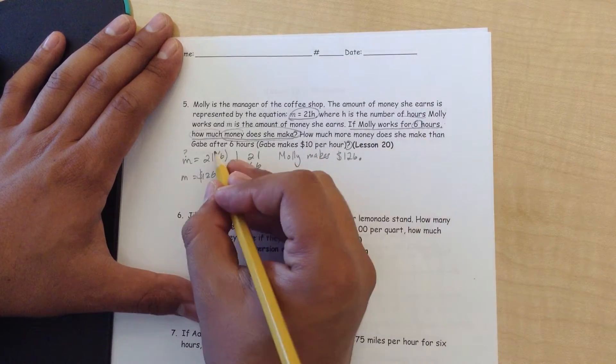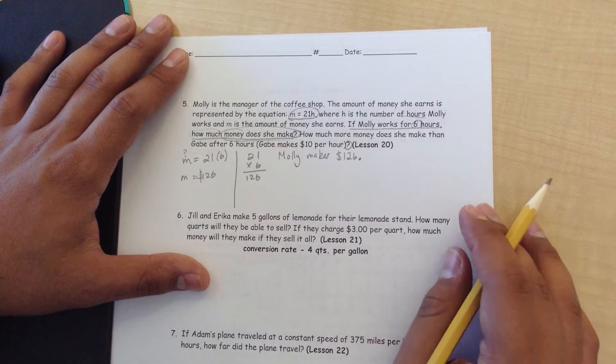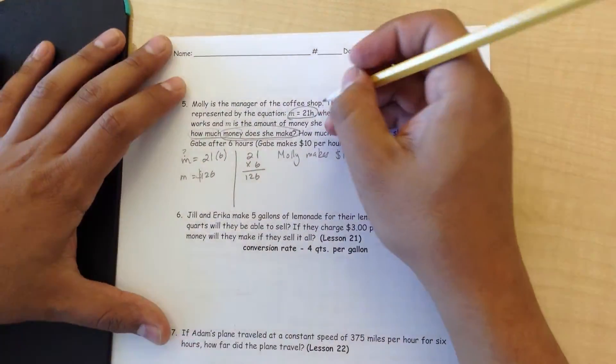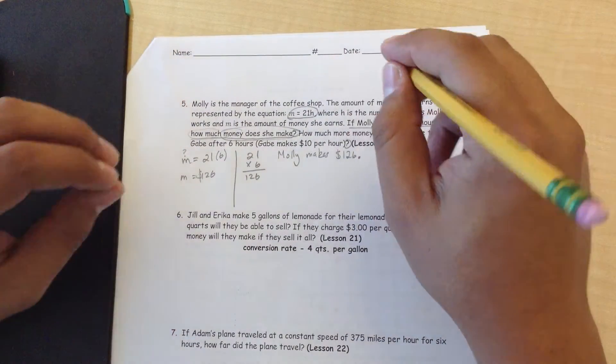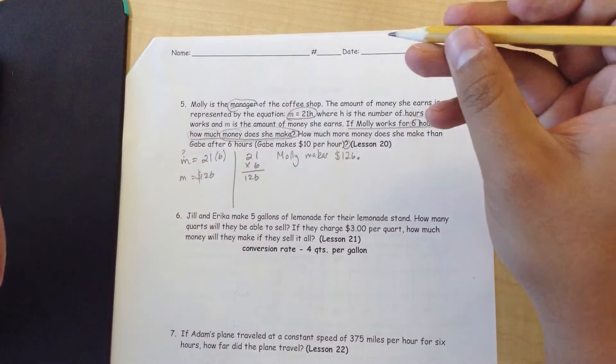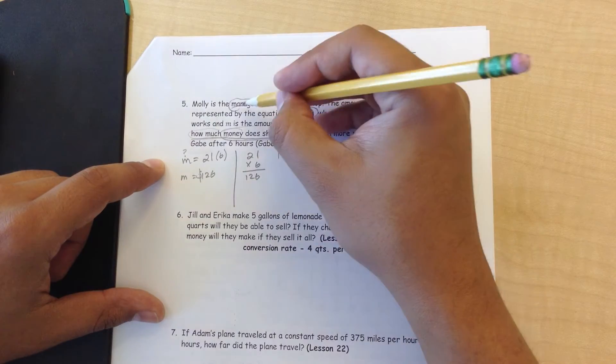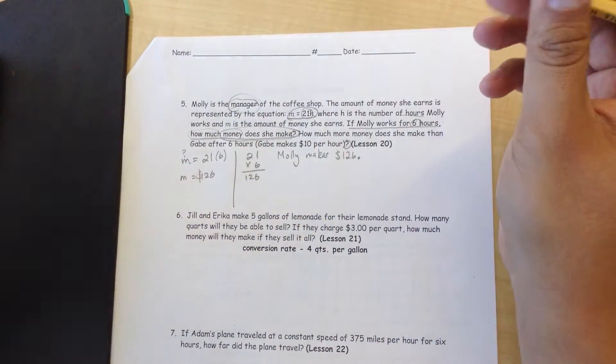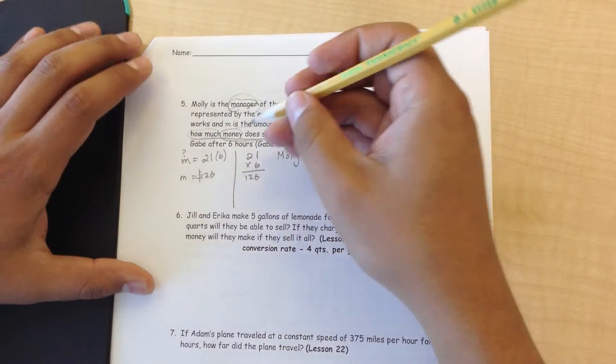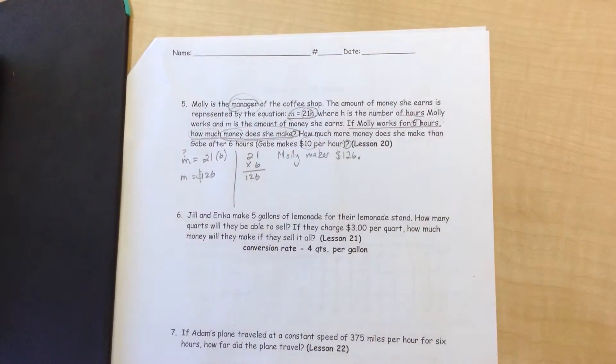How much more money does she make than Gabe after 6 hours, if Gabe makes $10 per hour? What the question failed to ask us, or notify us, is where this 21 belongs to. You have to understand, first off, 21 seems that it's the amount that Molly makes an hour. You can tell because it says 21 next to H. That means she's a manager. In the real world, a manager usually makes more than the employee does, because they have more responsibilities.